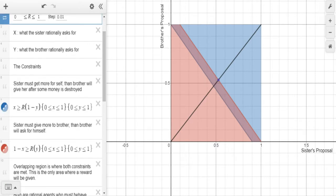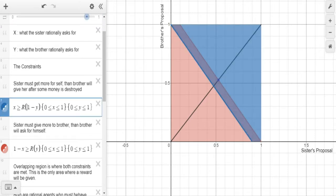We also have a set of constraints for making these decisions. We know that sister must ask more for herself than brother will give her after some of the money is destroyed. So sister is going to ask for x% of the money, and brother is going to leave her r times (1-y). r is how much money is left after mother destroys some, and then her brother is going to take y, leaving her with 1-y.